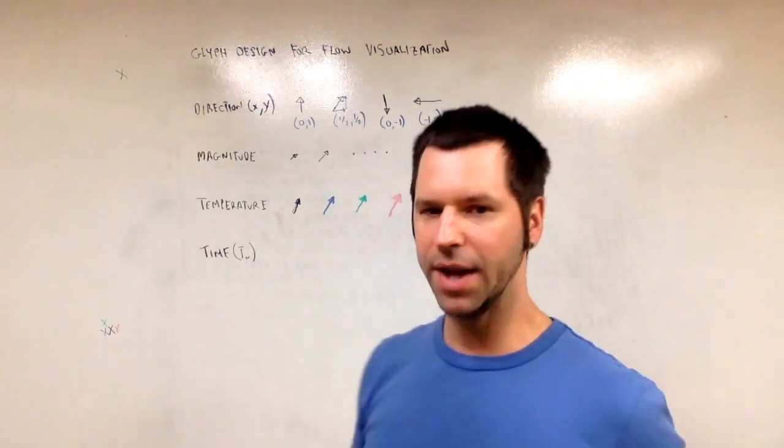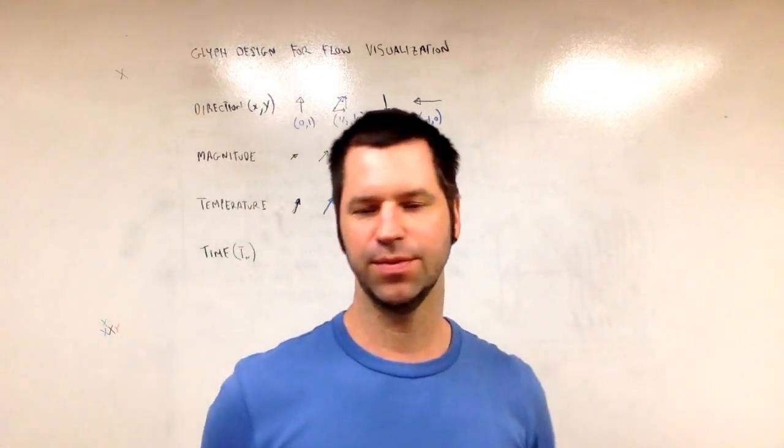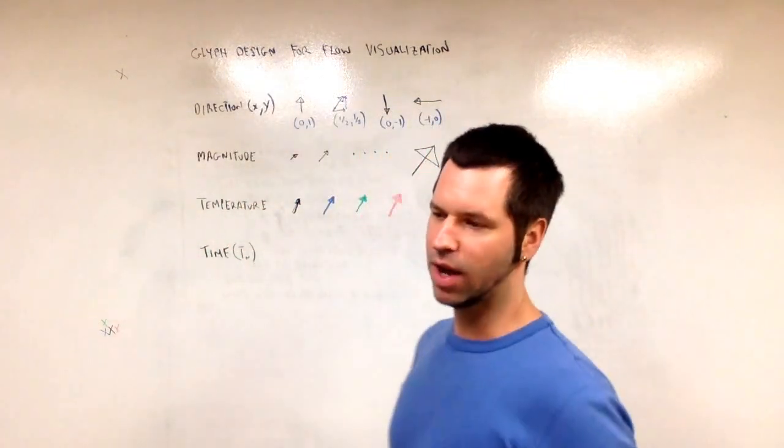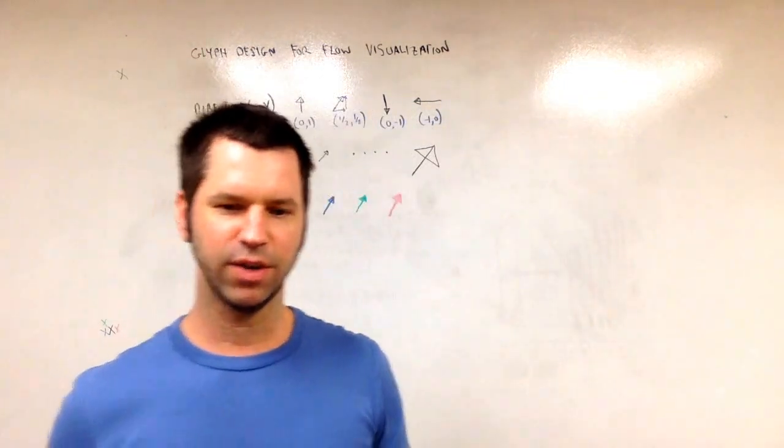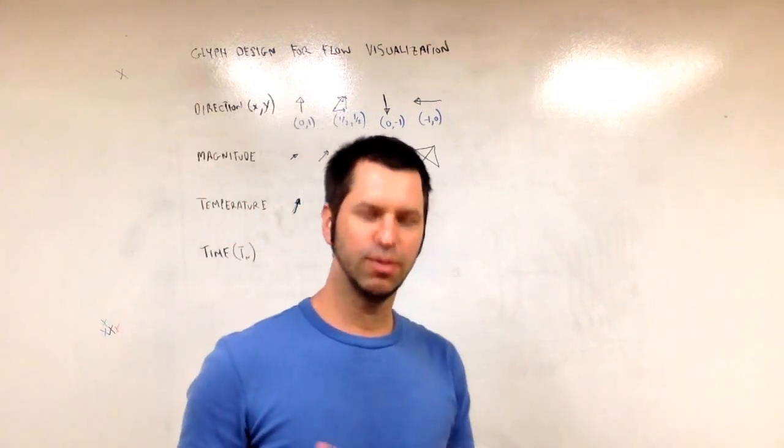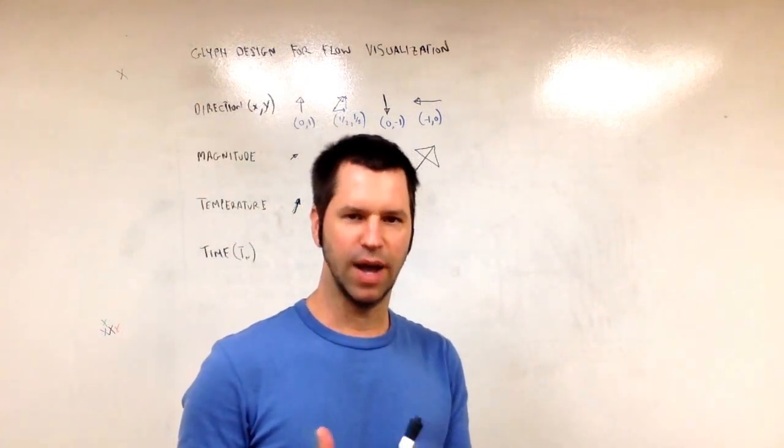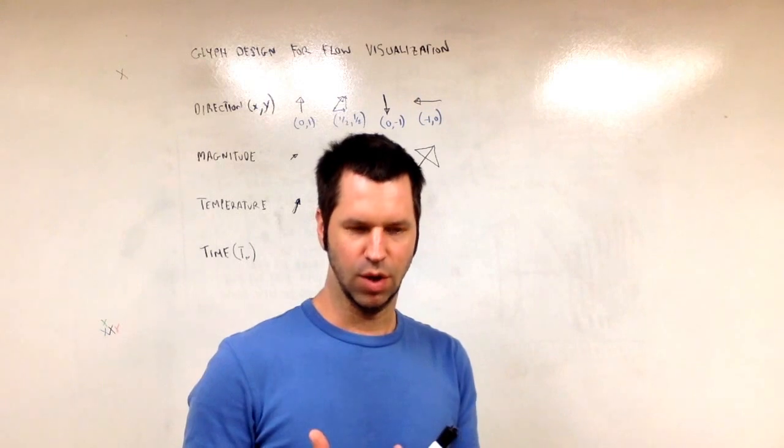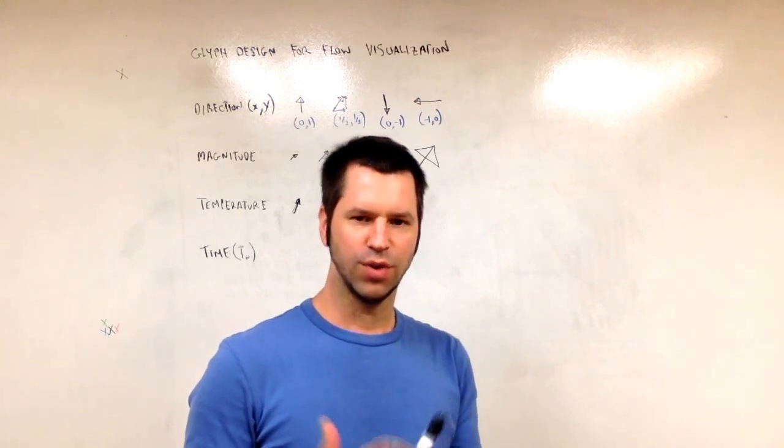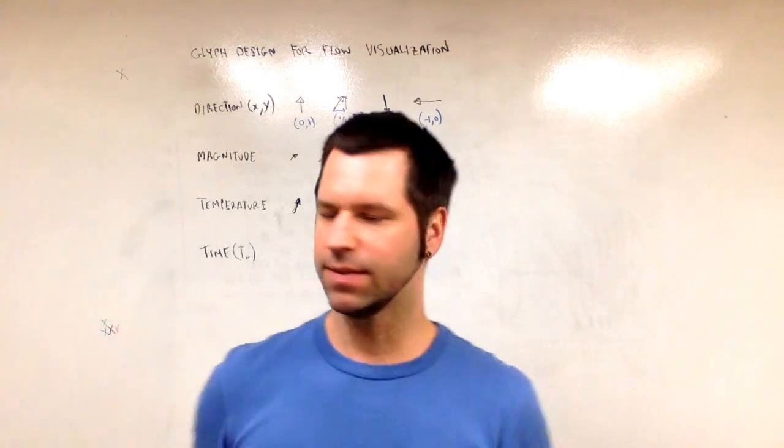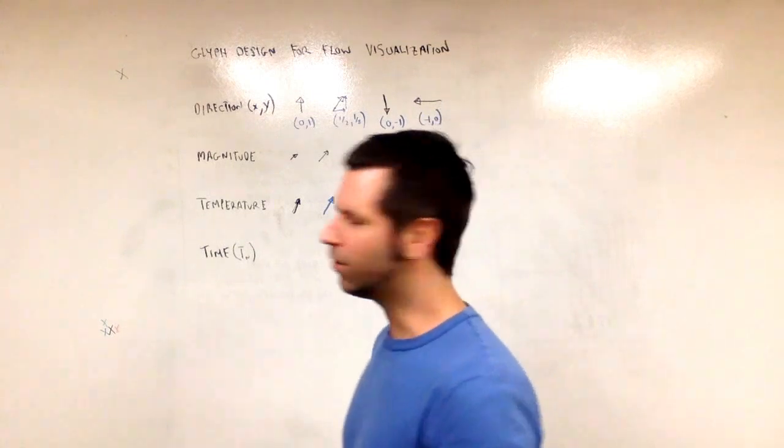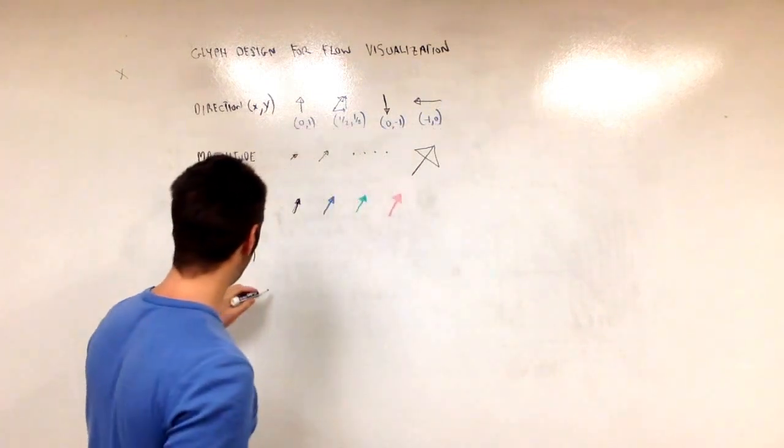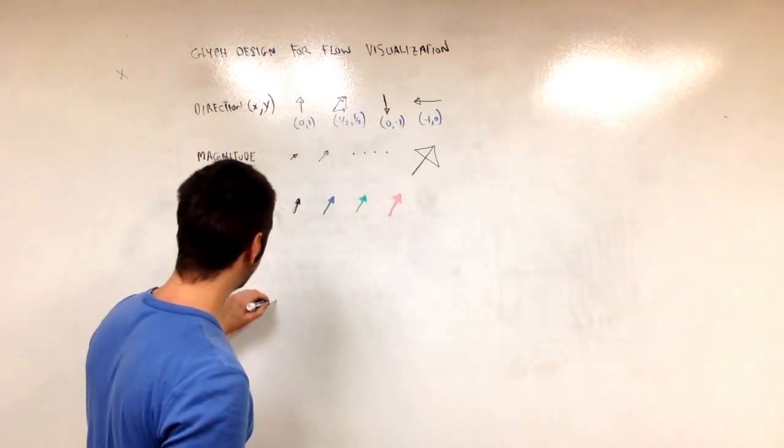We can add a little bit of curvature to the glyph. Remember streamlines, a curve everywhere tangent to the vector field. Well, we could make short streamlines. So short streamlines are called streamlets. So they're short curves that are everywhere tangent to the flow.